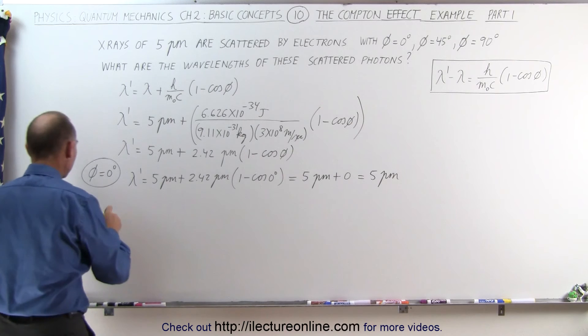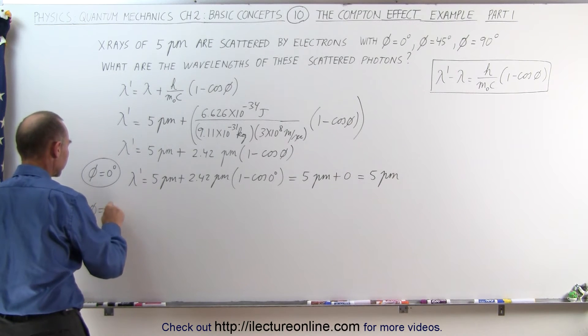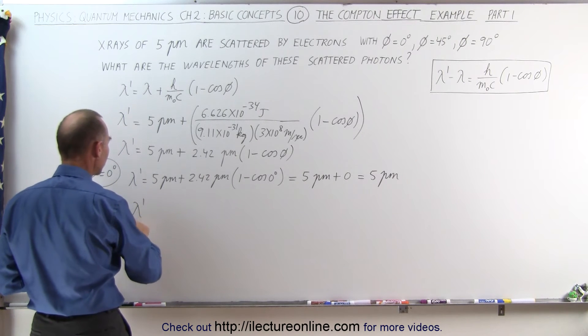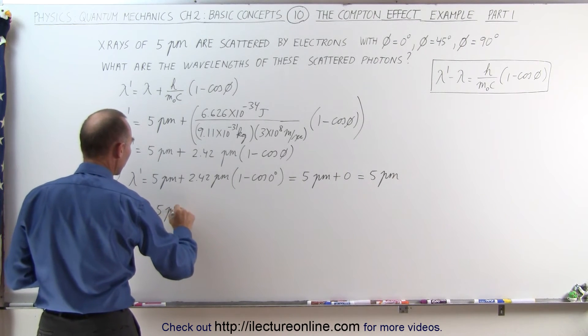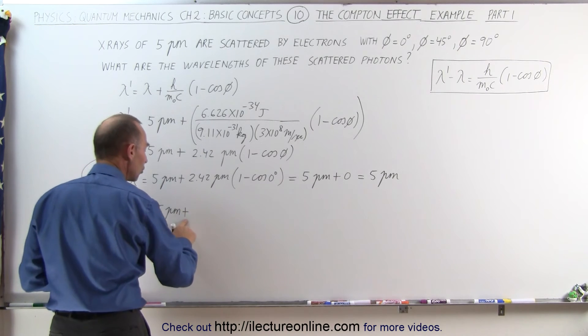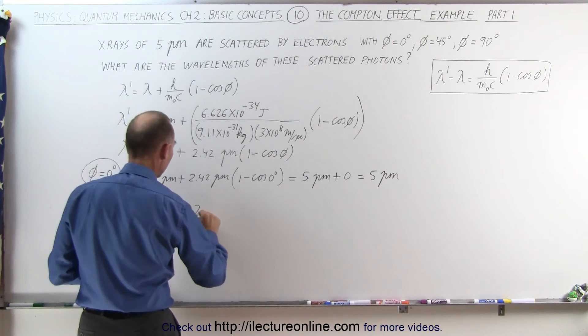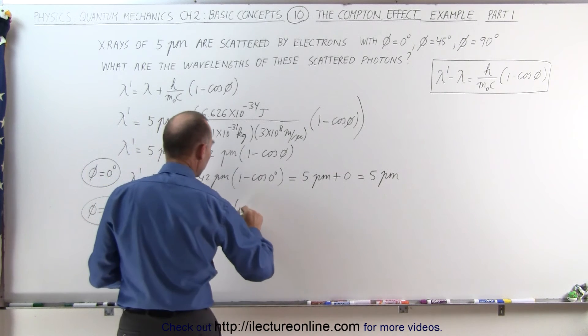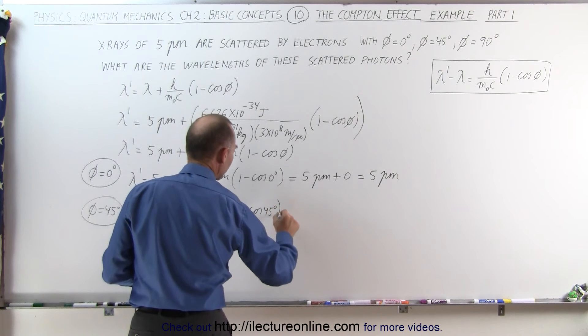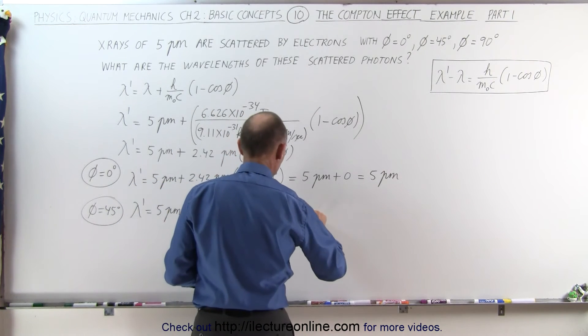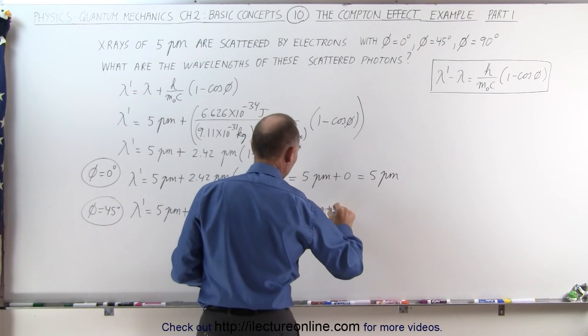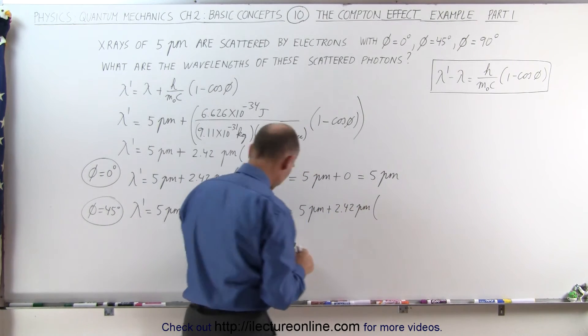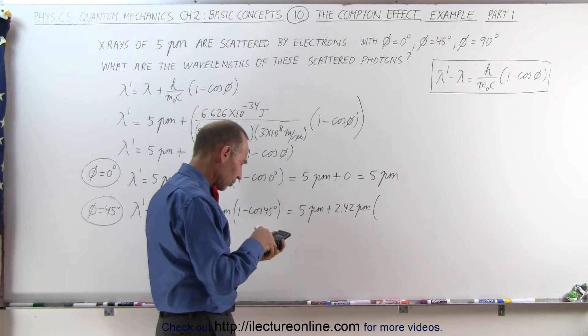But if they're scattered at 45 degrees then you know that the wavelength of the scattered photons is going to be equal to the original wavelength plus the change in the wavelength due to the Compton effect, which is in this case 2.42 picometers times 1 minus the cosine of 45 degrees, which is equal to 5 picometers plus 2.42 picometers times 1 minus 45 cosine.